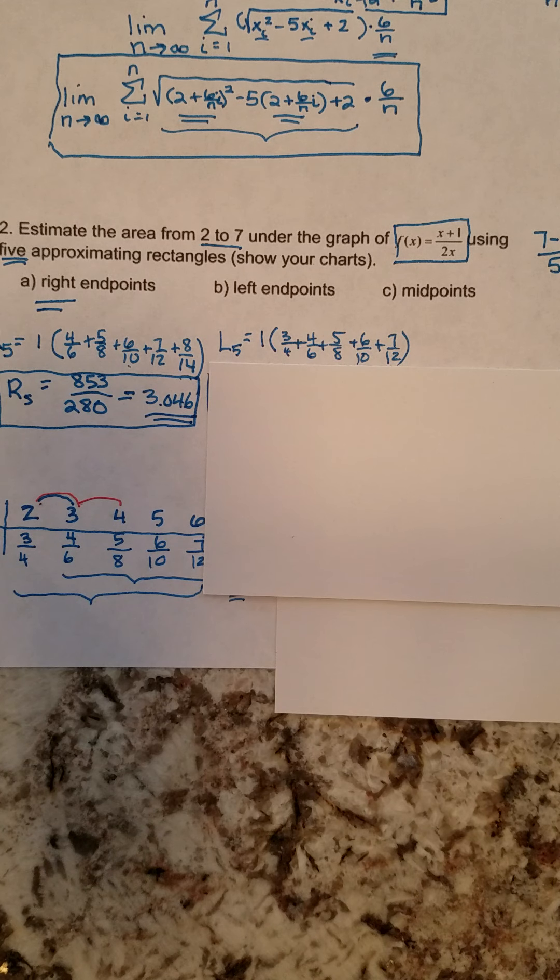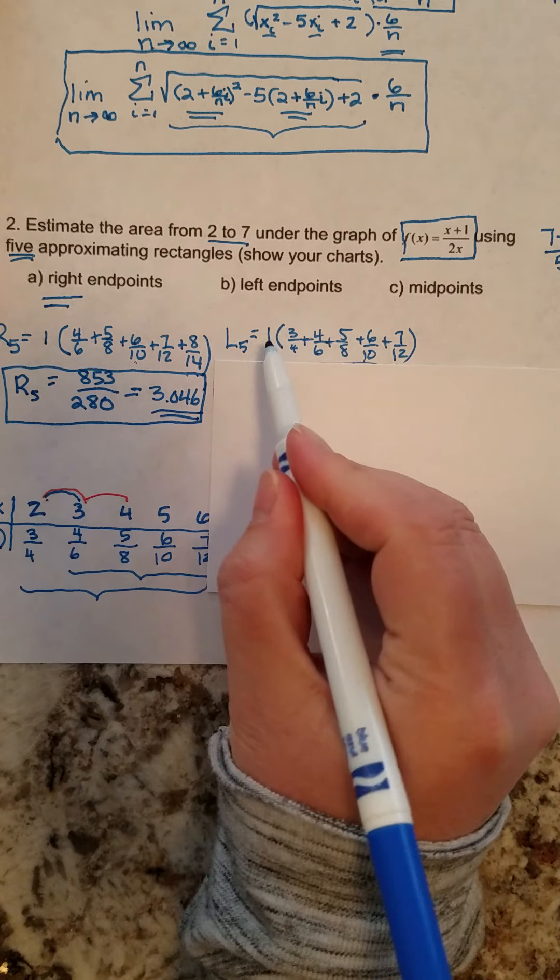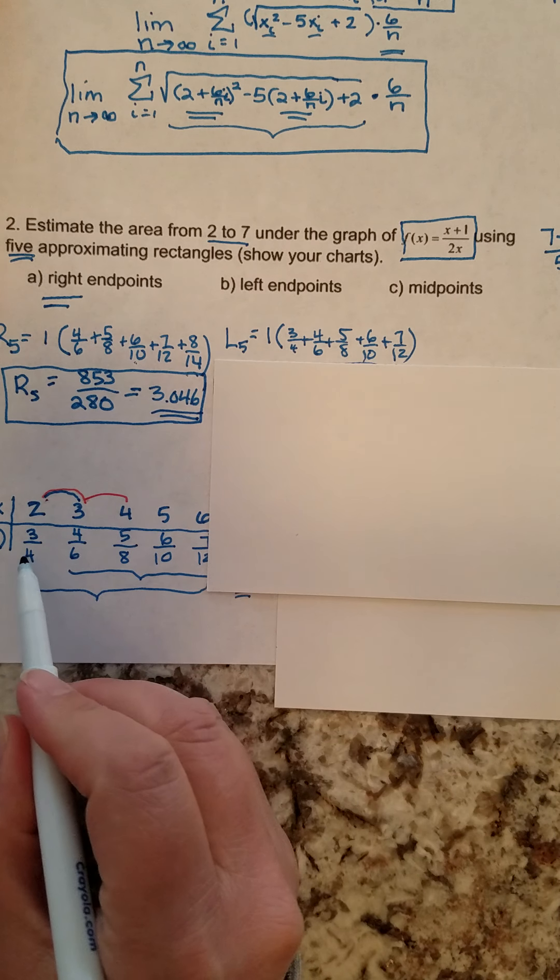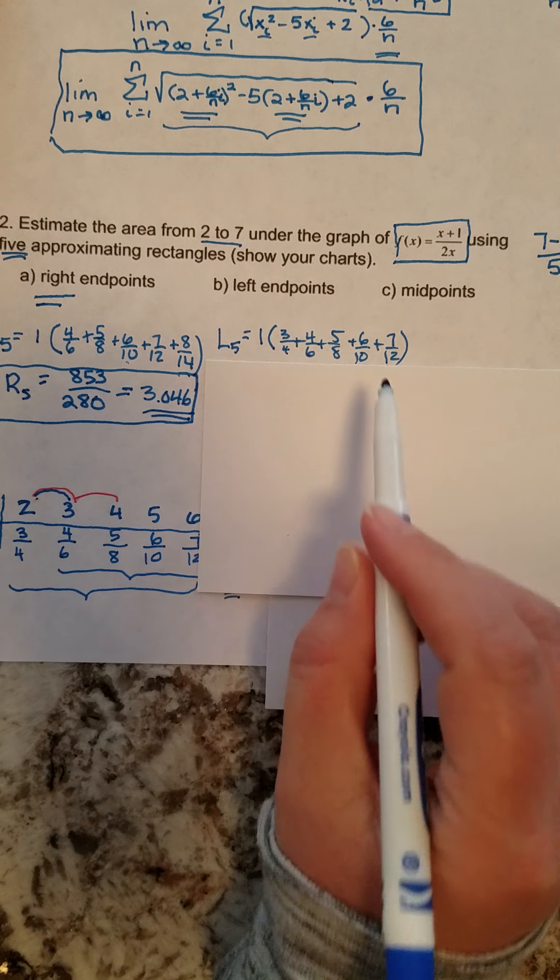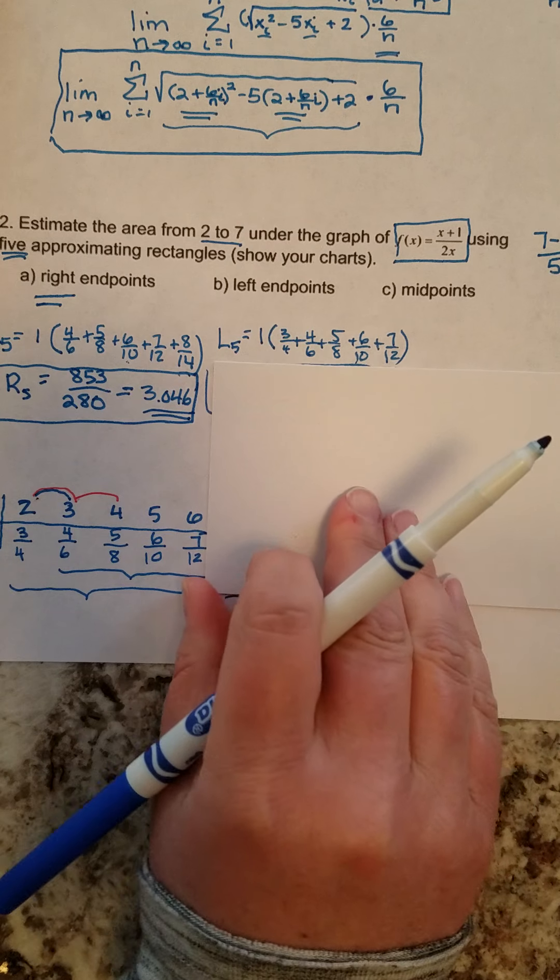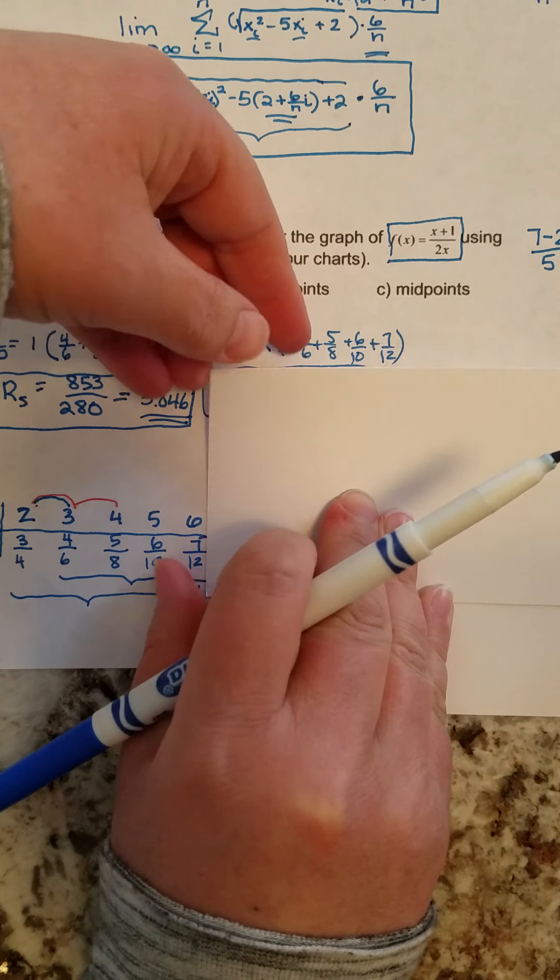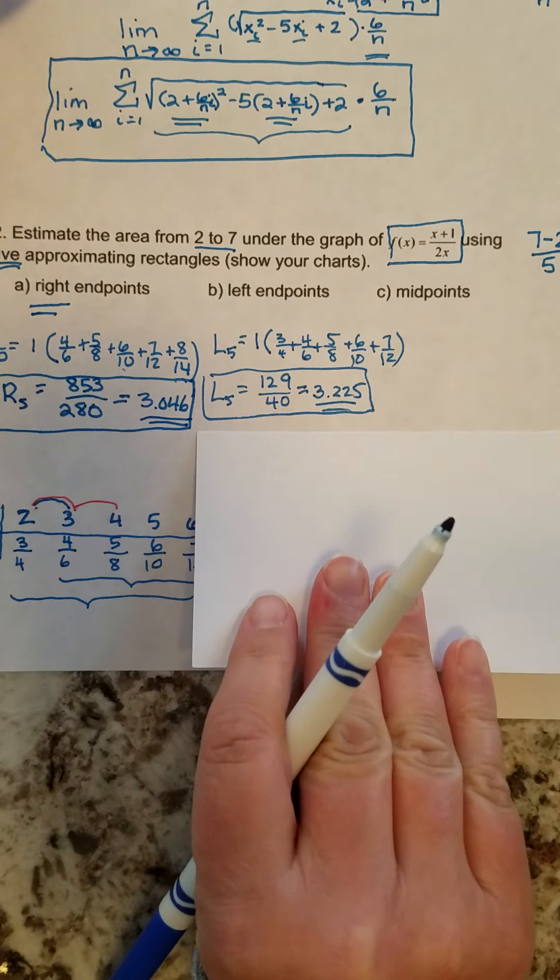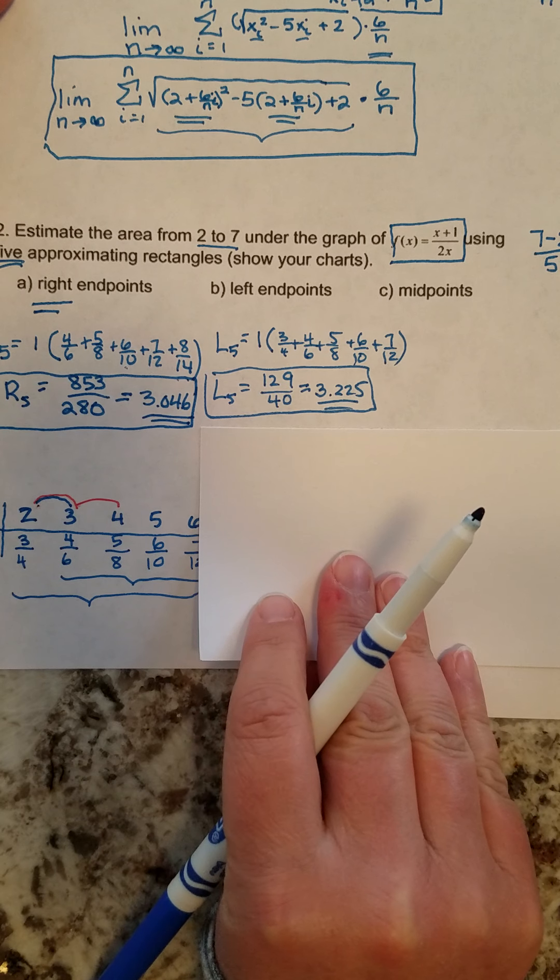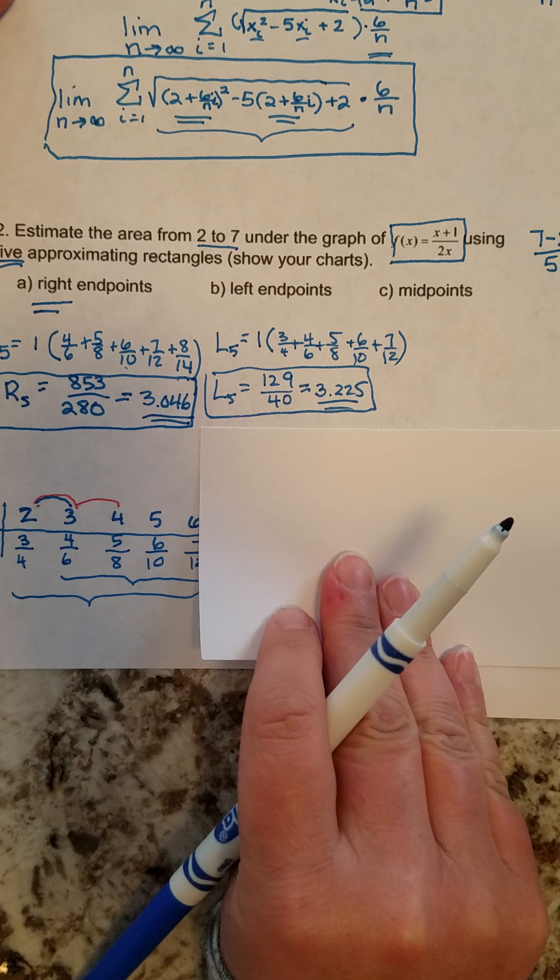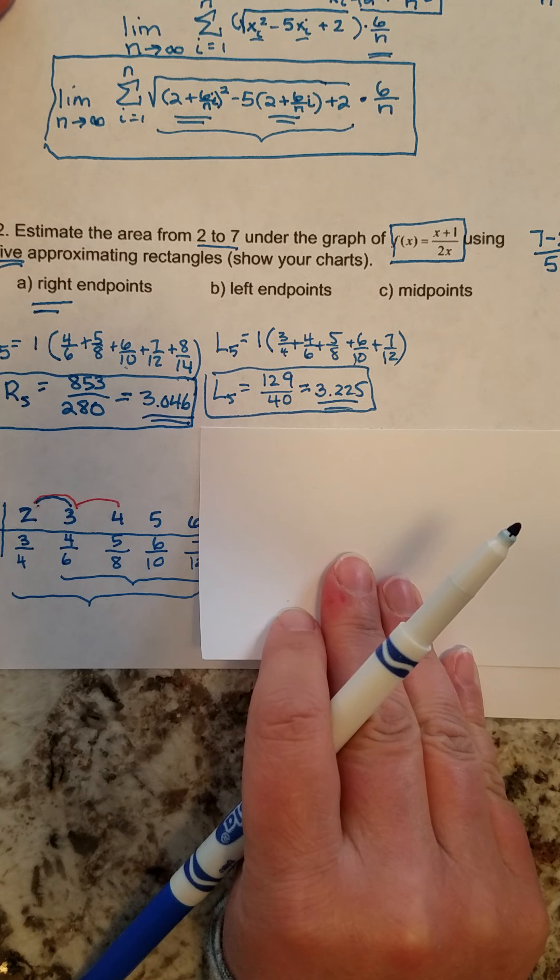That will mean I'm going to take the distance between the x's here, which are 1, and I'm going to take each of my y values, those first 5 right there, and add those together. After I do, I end up getting L sub 5 equals 129 over 40, or 3.225.